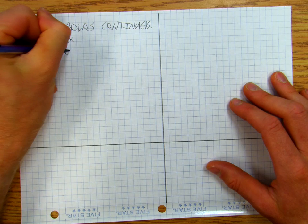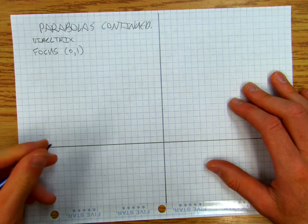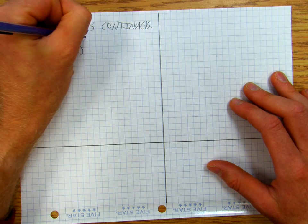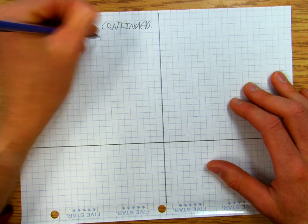So we're going to make my focus (0,1), and we're going to make my directrix y equals negative 1.